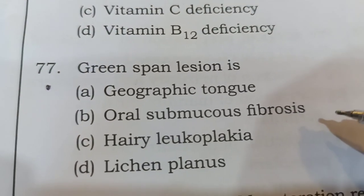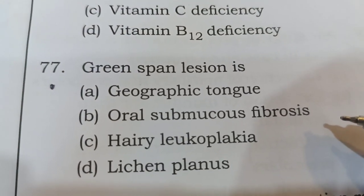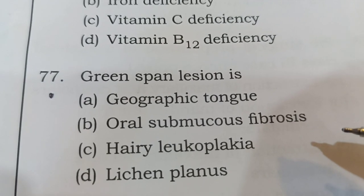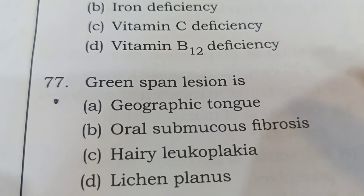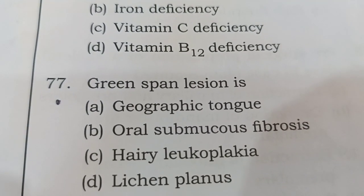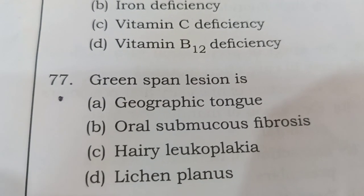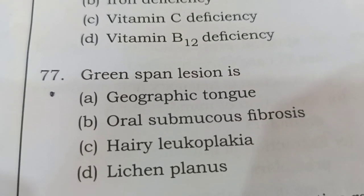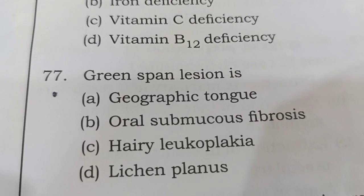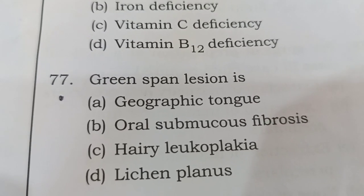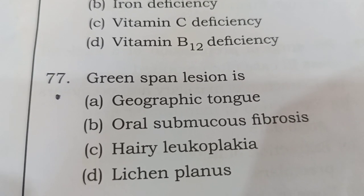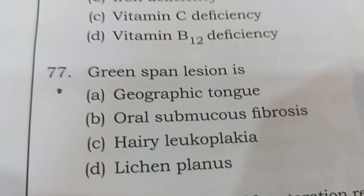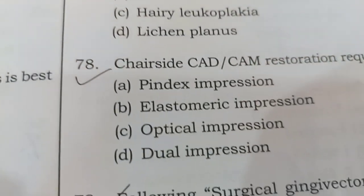Next question: Greenspan lesion is. Your options are: A) Geographic tongue, B) Oral submucous fibrosis, C) Hairy leukoplakia, or D) Lichen planus. Greenspan lesion is most probably seen in hairy leukoplakia. Option C is the correct answer.